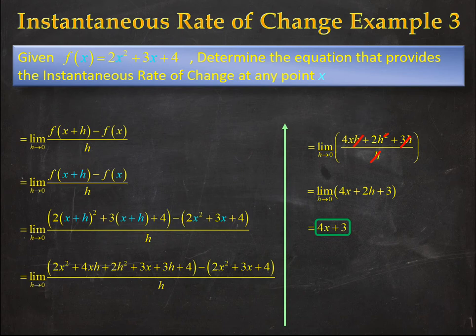In other words, if we determine where 4x plus 3 is positive the graph is going up, where 4x plus 3 is negative the graph is going down, and we can determine every point of x where these things occur. This instantaneous rate of change in terms of the variable is a very powerful tool that we'll use later on.